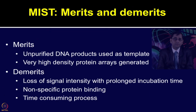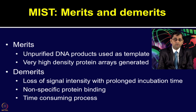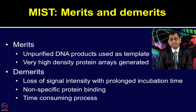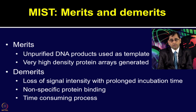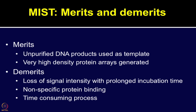Let us now talk about the merits and demerits of MIST technology. Unpurified DNA products can be used as template source, and very high-density protein arrays can be generated because the spot chemistry is not very complicated. Limitations include loss of signal intensity with prolonged incubation time, potential stability issues since the cell-free expression system is also printed on the arrays, non-specific protein binding, and the overall process being more time-consuming.